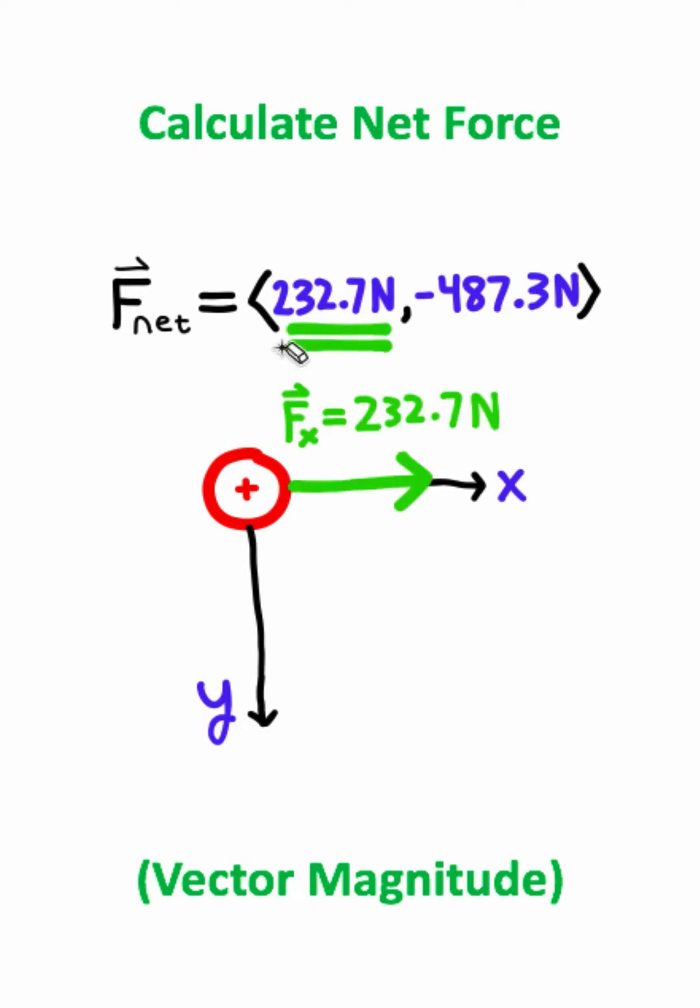Let's go ahead and draw these vectors. We have a 232.7 Newton force vector going horizontally. Now the vertical vector - rather than plotting it at the origin, I'm going to plot this vector using the tip-to-tail method, where I plot the tail of the vertical vector at the tip of the horizontal vector.